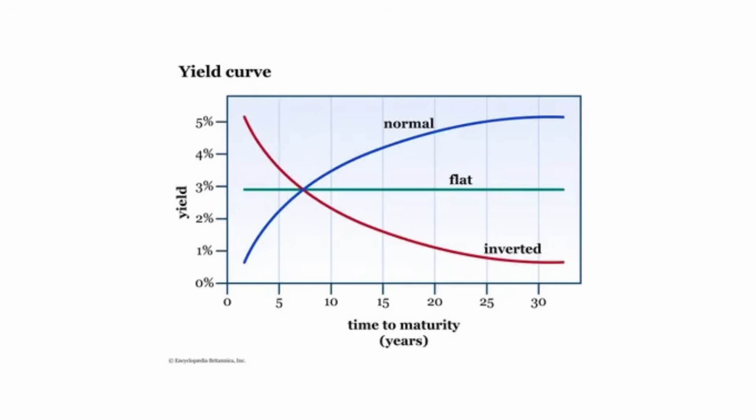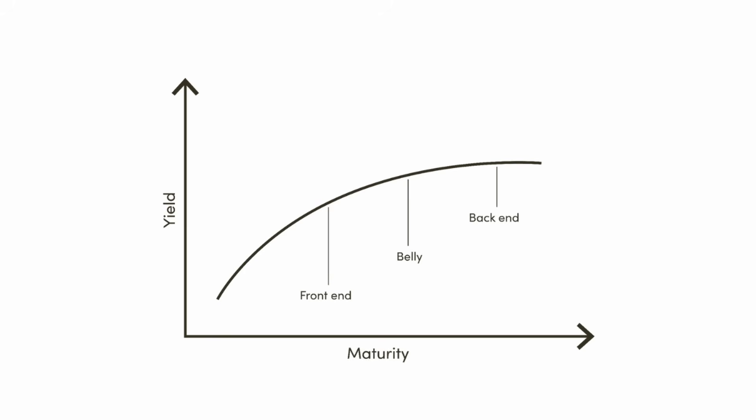First, what exactly is the yield curve? It's a graph that plots the yields or interest rates of government bonds across different time lengths or maturities. On the front end of the curve, you have short-term treasuries like the two-year and below, whereas on the long end of the curve, you have treasuries like the 10-year or the 30-year.